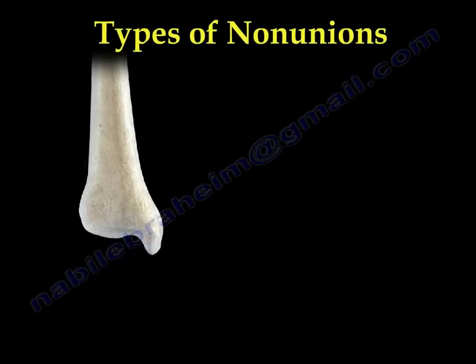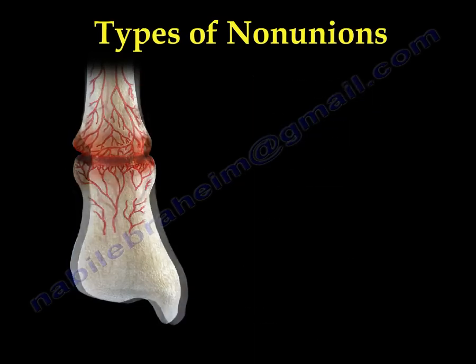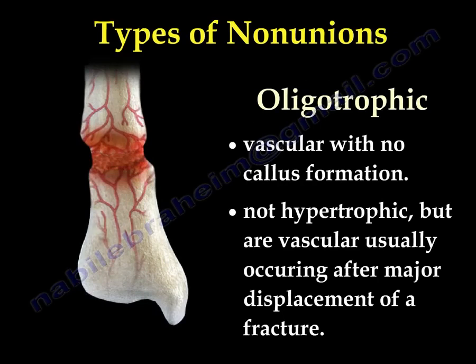Types of non-union. The first one we call elephant foot or hypertrophic non-union — it means there is a lot of callus. It is vascular and results from inadequate immobilization or fixation, so there is mobility and when there is mobility there is a lot of callus. The second one is called oligotrophic — oligo means a little — so there is blood supply with little or no callus formation. It usually occurs after a fracture that has major displacement.